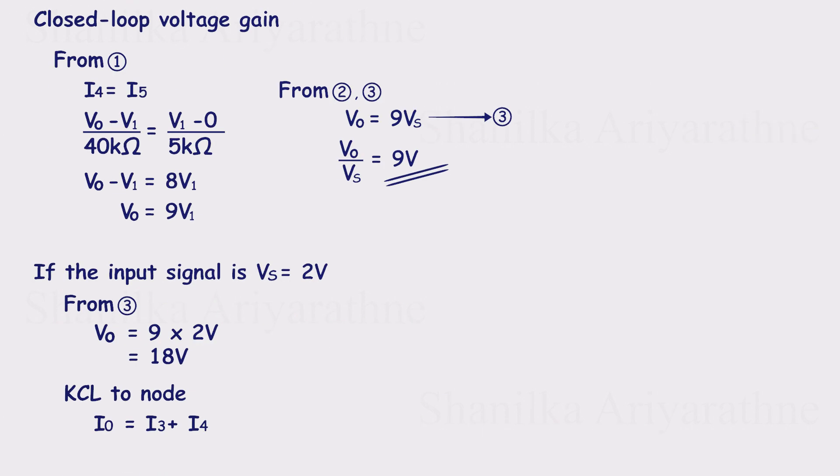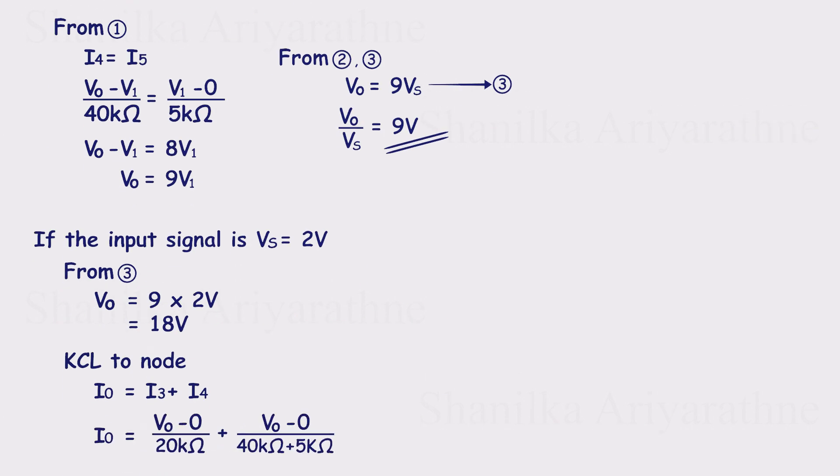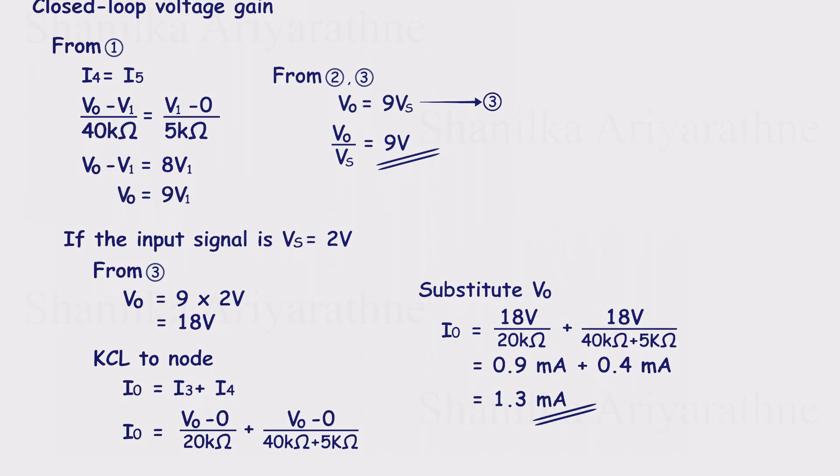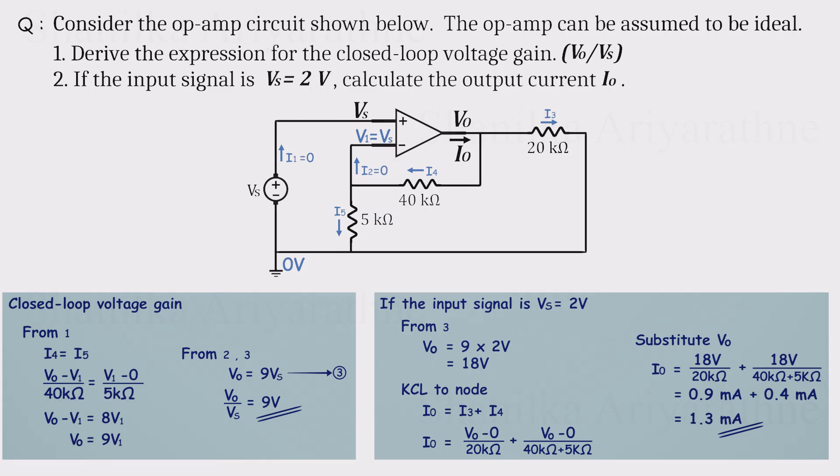So the total output current I0 is VO over 20k plus VO over 45k. Now substitute VO equals 18 volts. Solving gives an output current of about 1.3 milliamps. And that's it. We've derived the closed loop gain and calculated the output current through the load. A neat little exercise, and definitely the kind of problem you'll often see on exams.